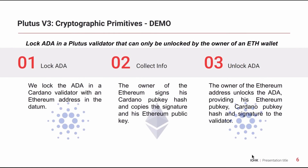This brings us to the demo. I want to demonstrate how it is now possible to send ADA on Cardano to a recipient identified by their Ethereum address. The workflow is as follows: first, the sender locks ADA in the smart contract and provides the Ethereum address of the recipient in the datum. Then the recipient signs a message with MetaMask using their Ethereum address, and the message they sign will be their Cardano public key hash. Using the Ethereum public key, the Ethereum signature, and the Cardano public key hash, they can create a redeemer that allows them to unlock the funds on Cardano.